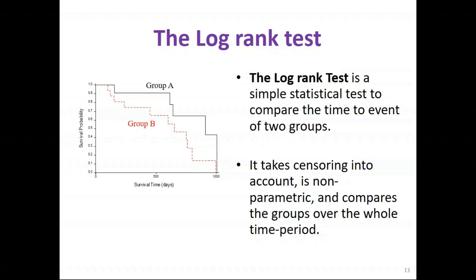The log-rank test is a statistical test that complements this, testing the null hypothesis that there's no difference between populations in the probability of an event at any time point. It's a non-parametric approach — we're not making assumptions about the shape of the survival curve — and it takes censoring into account, looking for differences between curves across the whole time period rather than at specific time points.